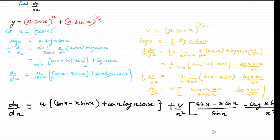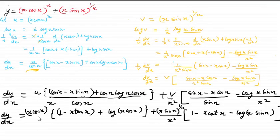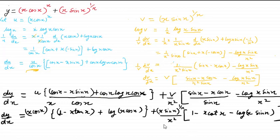Here you can put the values of u and v back and simplify. I've taken the value of u and divided by cos x, so cos/cos gives 1 and sin/cos gives tan, so we get (1 − x·tan x) plus cos x, and x·cos x remains. For v, which is (x·sin x)^(1/x), x² comes as it is, and dividing by sin gives sin/sin = 1 and cos/sin = cot, so we get (1 − x·cot x) minus log(x·sin x). This is your final answer.